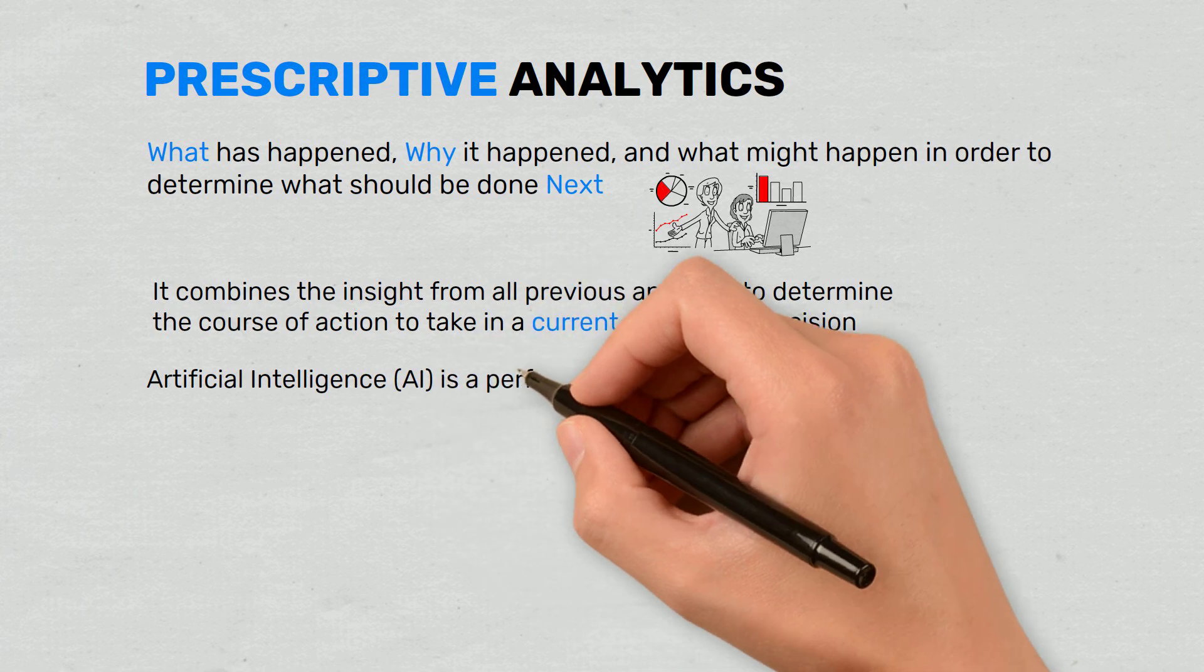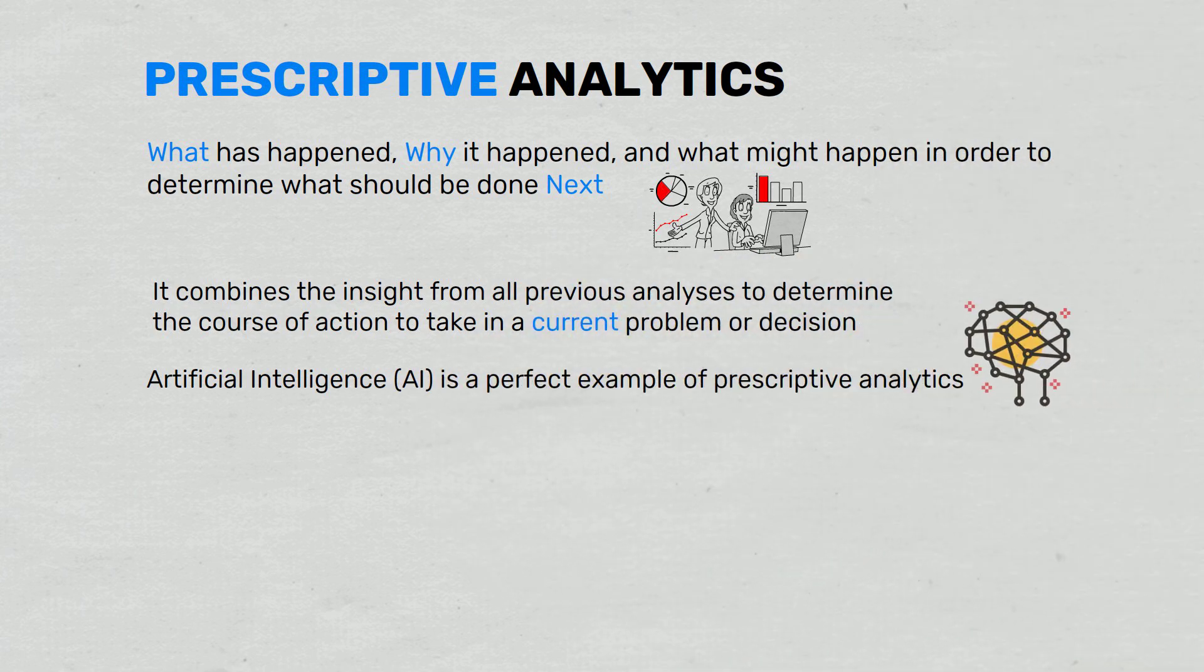Artificial intelligence (AI) is a perfect example of prescriptive analytics. AI systems consume large amounts of data to continuously learn and use this information to make informed decisions.